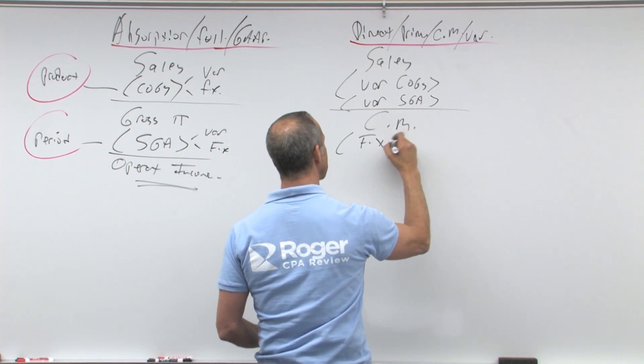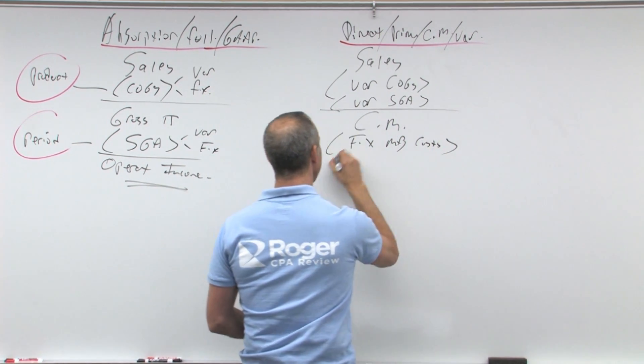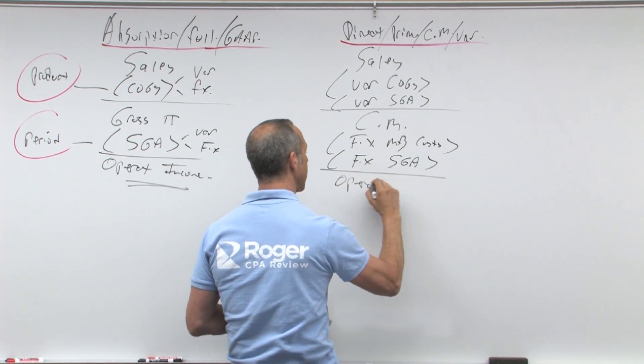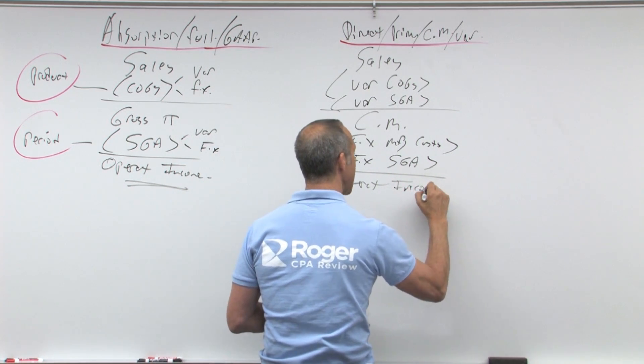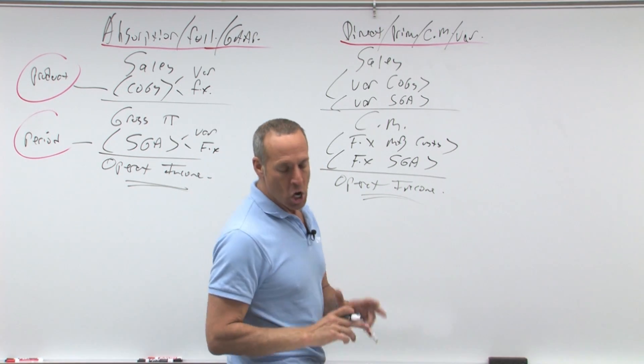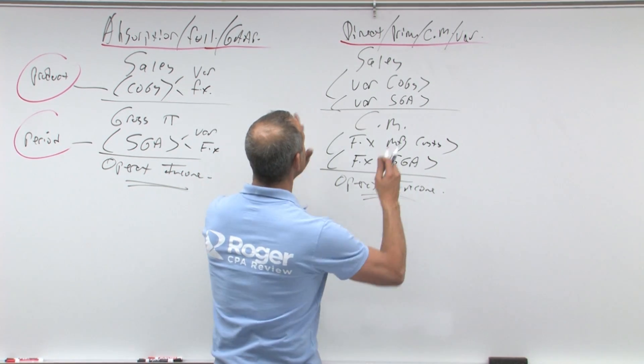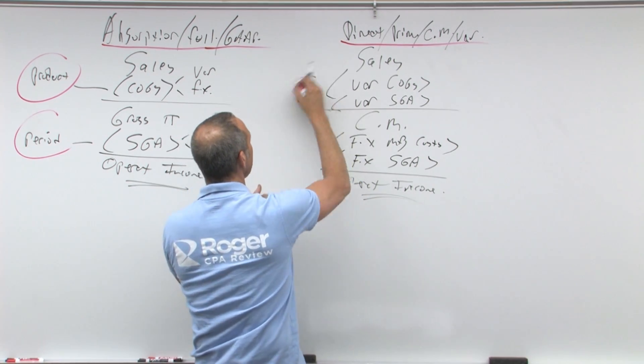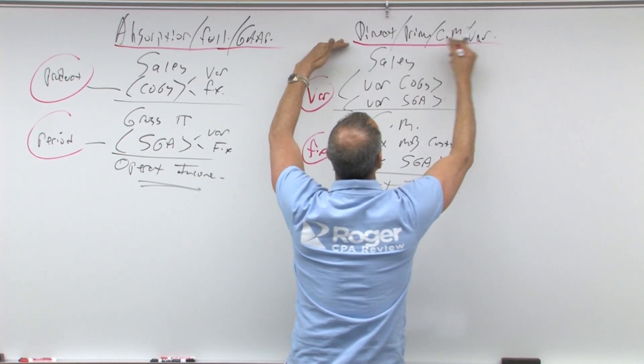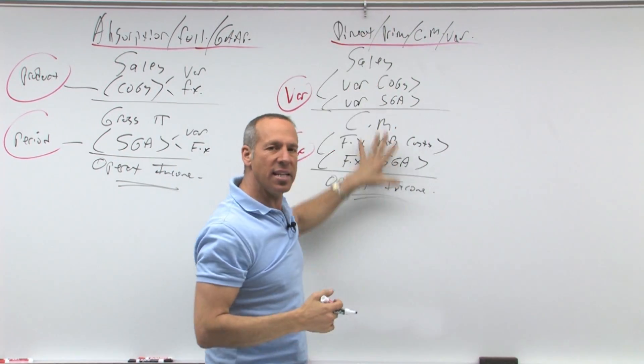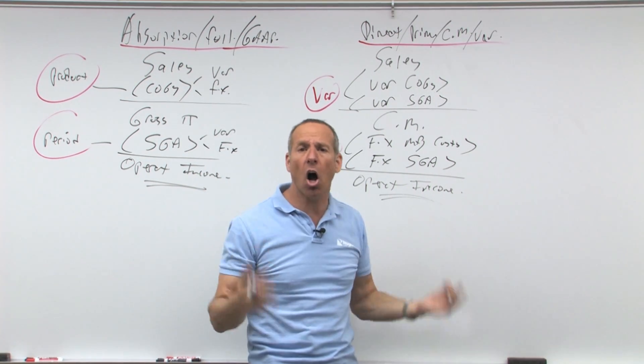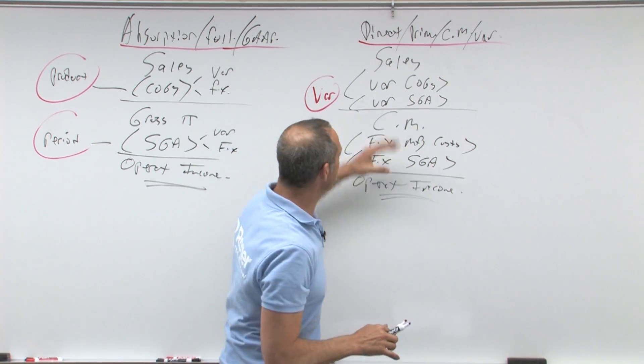Minus our fixed manufacturing costs minus our fixed SG&A equals same pre-tax operating income. Now I say same because it's the same term, but the amount won't be the same. So what we're doing here is we're separating out variable costs from fixed costs. So here it's called variable direct prime contribution, why? Because in this case what it assumes is fixed costs are a sunk cost. I got these fixed, sunk costs. So what I'm really concerned with is my variable cost.